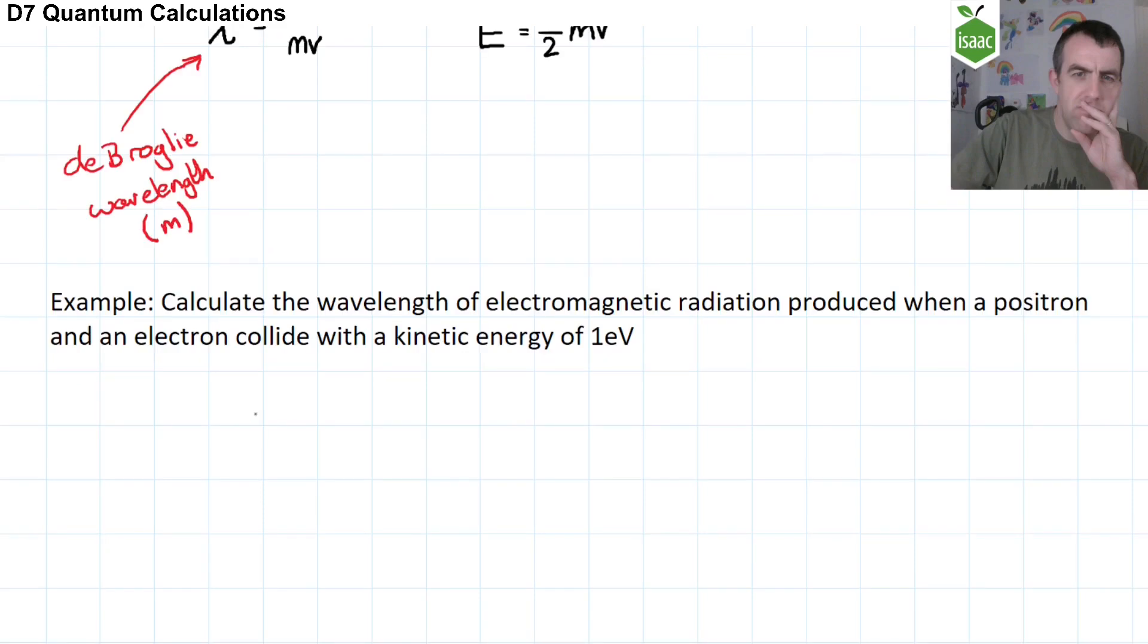So let's have a look at an example question. Here we are asked to find the wavelength of electromagnetic radiation produced when a positron and an electron collide. And we are told that they have kinetic energy in this collision of one electron volt.